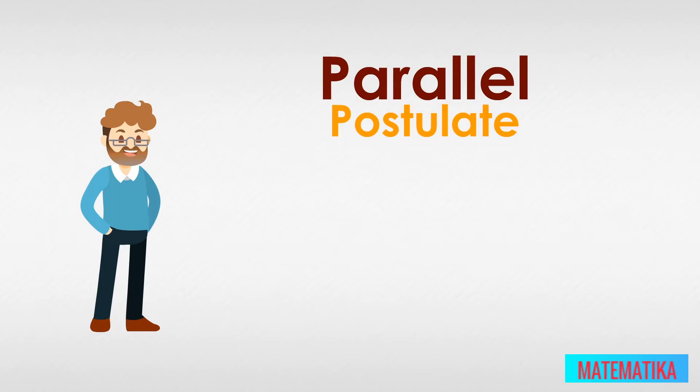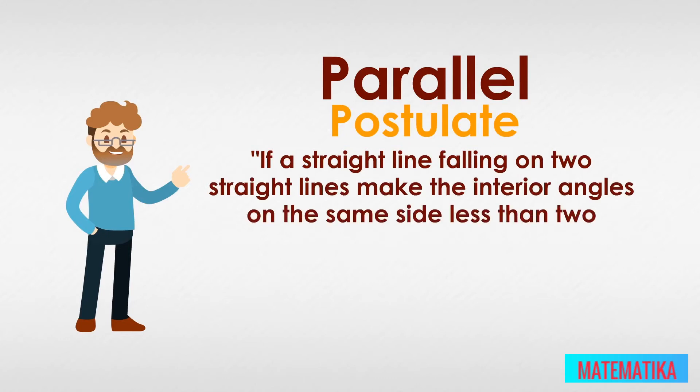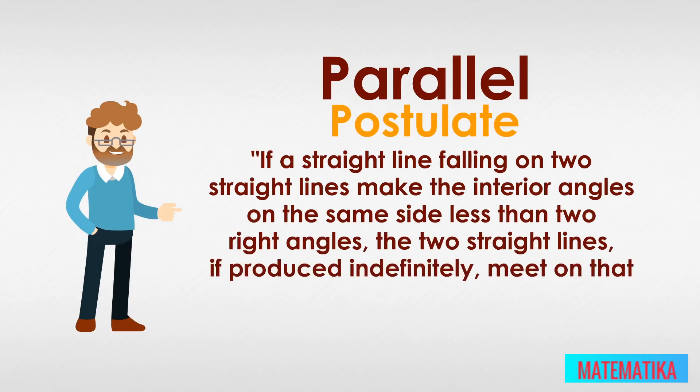Which, in an English translation by Thomas Heath, states: if a straight line falling on two straight lines makes the interior angles on the same side less than two right angles, the two straight lines, if produced indefinitely, meet on that side on which are the angles less than the two right angles.